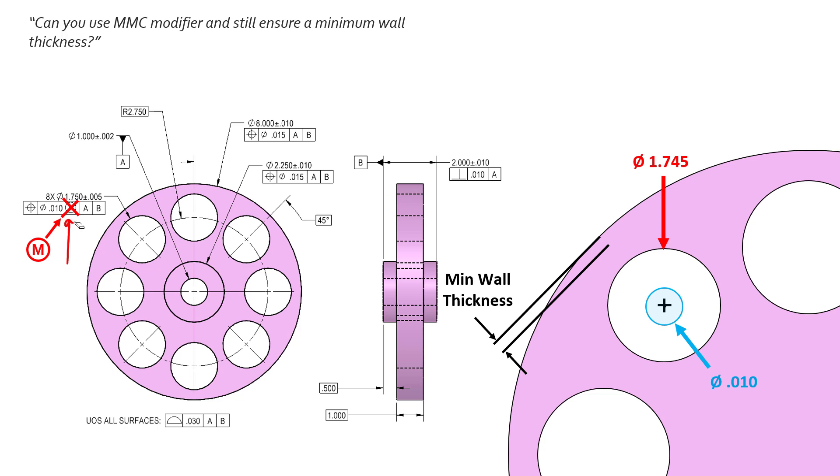Now what does the MMC modifier mean? We read the feature control frame from left to right. Says this feature has a position diametrically of 10 thousandths when it measures at MMC with respect to A and B. And if we measure at MMC or 1.745, our MMC is where the maximum amount of material exists on the part or the smallest diameter for an internal feature like this. Our MMC is 1.745, so we know we only get 10 thousandths based off our feature control frame.